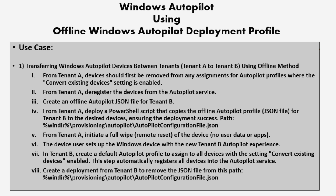Then from tenant A, we have to deregister the device from the Autopilot deployment service. Then we have to create an offline Autopilot JSON file for tenant B. Then from tenant A, we have to deploy a PowerShell script that copies the offline Autopilot profile — the JSON file for tenant B — to the desired location. The path of the JSON file should be under the Windows directory, provisioning folder, then a folder called Autopilot, and within that we copy the AutopilotConfigurationFile.json.